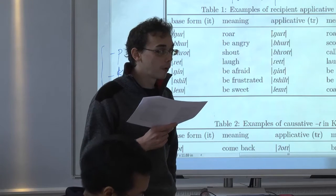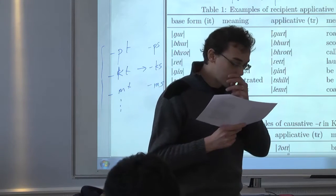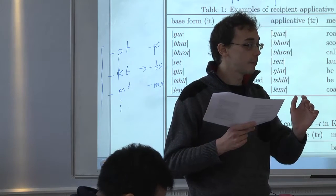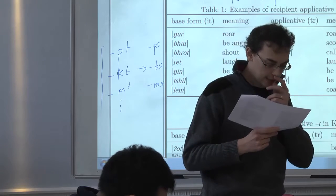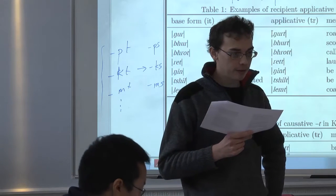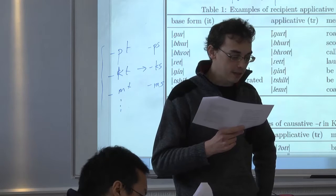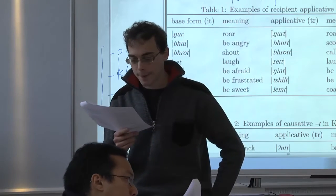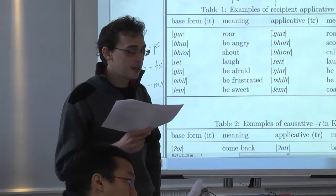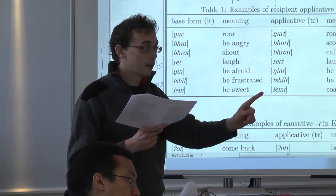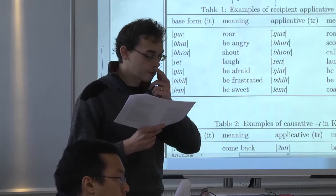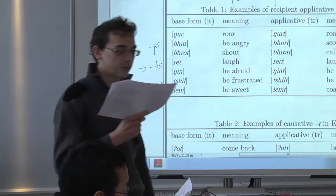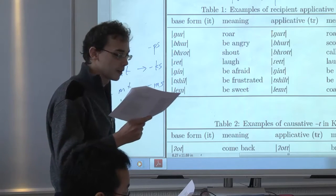In the case of cause to weep, the person who weeps is the patient who corresponds to the subject of the intransitive. In the second case, the applicative derivation, the person who weeps is the agent corresponding to the subject of the intransitive. So you see the different relations between the causative and the applicative derivations within this language.